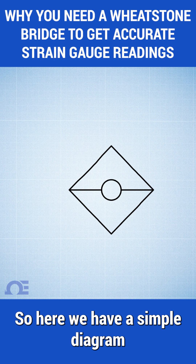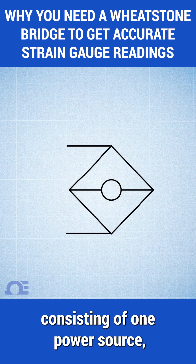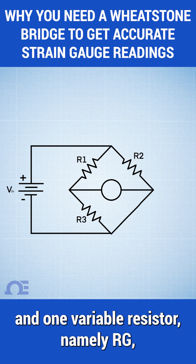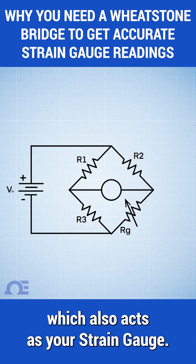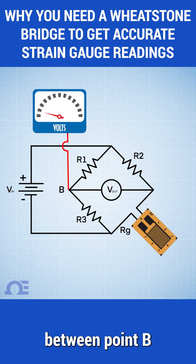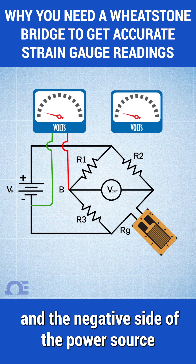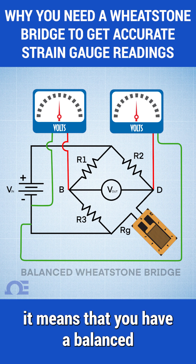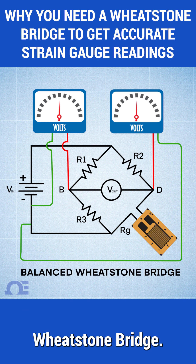Here we have a simple diagram of a Wheatstone bridge circuit consisting of one power source, three precision resistors — namely R1, R2, and R3 — and one variable resistor, namely RG, which also acts as your strain gauge. When you measure the voltage between point B and the negative side of your power source, and point D and the negative side of your power source, if they are the same, it means that you have a balanced Wheatstone bridge.